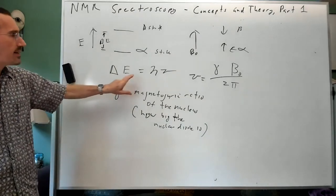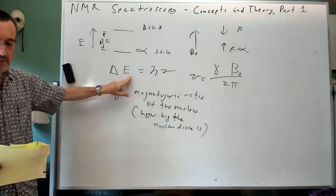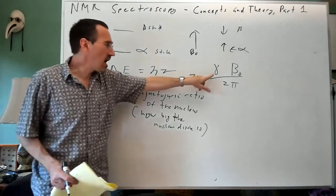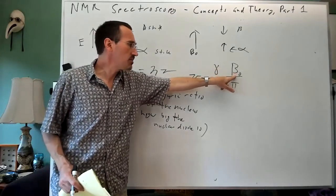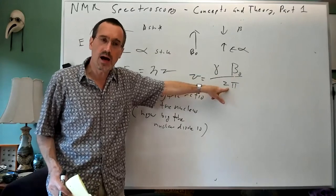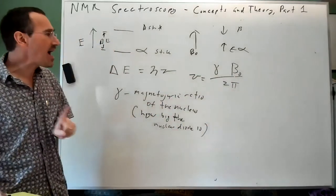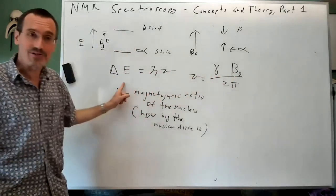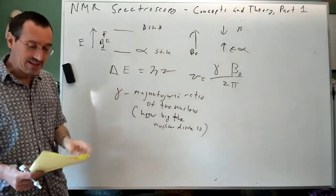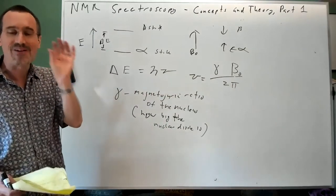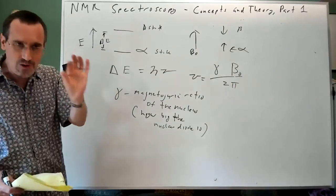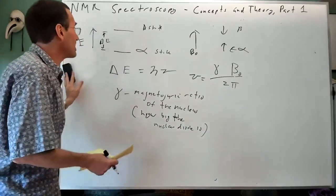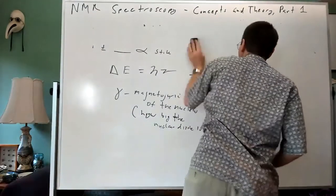Gamma is the magnetogyric ratio or property of the nucleus, essentially meaning how big the nuclear dipole is. And B naught, divided by 2 pi. If you put all of this together, you see that the higher the B naught, the bigger the energy difference.